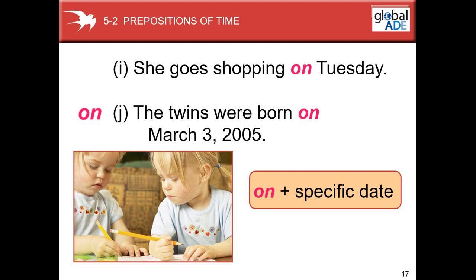Another one: the twins were born on March the 3rd, 2005. The twins were born on March the 3rd, 2005. So we use 'on' plus a specific date.